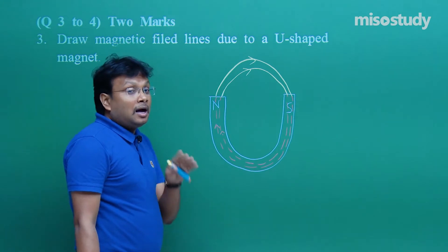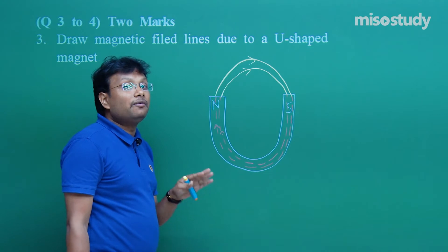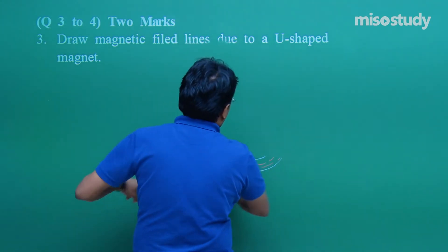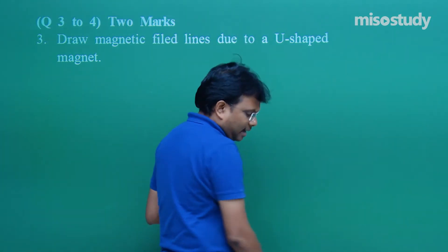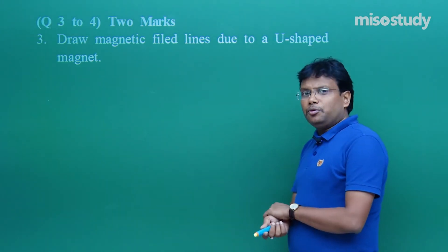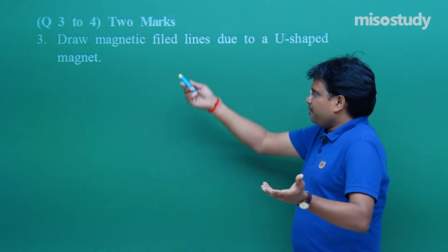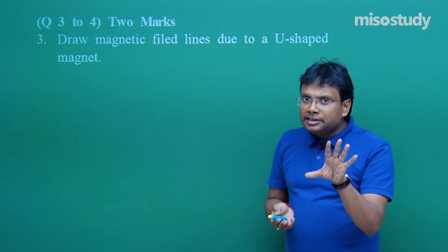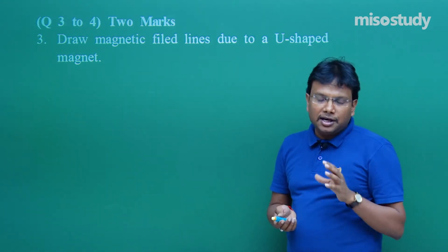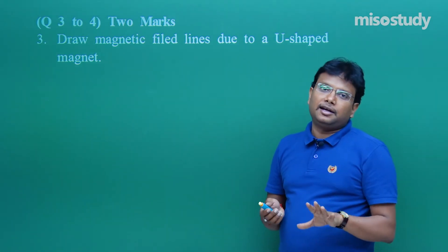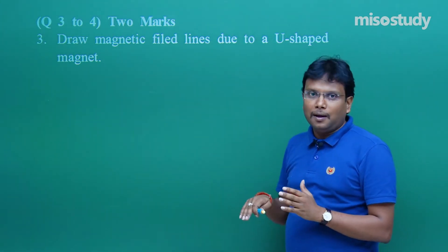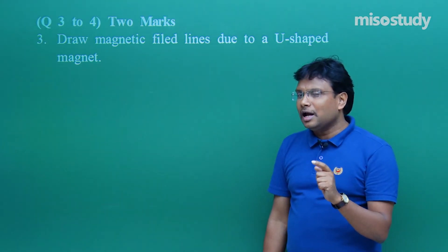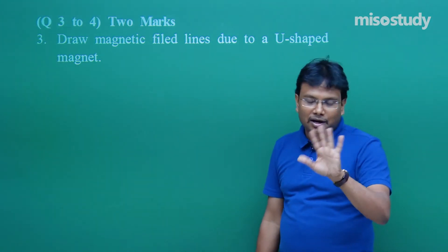You can justify from this diagram that magnetic field lines always form a closed loop. The hidden agenda or main theme of this question is to check whether you are aware of the fact that magnetic field lines form a closed loop while electric field lines never form a closed loop. Then comes question number 4.